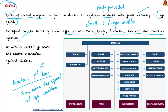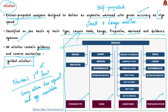In the general classification of missiles, they are classified based on operation type, range, launch mode, and propulsion system. Our focus today is on the operation type classification. Based on their operations, missiles are classified as cruise missiles and ballistic missiles. Let us briefly see about cruise missiles first.